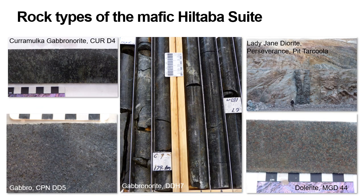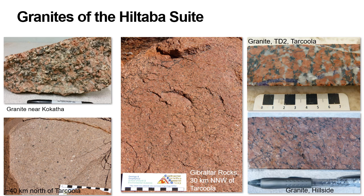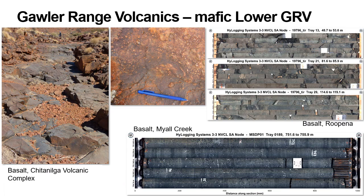Within the Mafic Hildibus Suite there is a variety of different rock types, including gabbronorites through to diorites and dolerites. These are examples of the compositional variation we see in the Mafic Hildibus Suite. Within the lower GRV we have more compositional variation, with basaltic units all the way through to rhyolitic units. The mafic component of the Gawler Range Volcanics comprises basaltic lava flows found in volcanic centres and distributed throughout the province, generally characterised by amygdaloidal flow tops suggesting sub-aerial lava flows, also preserved in drill core in the southern part of the province.